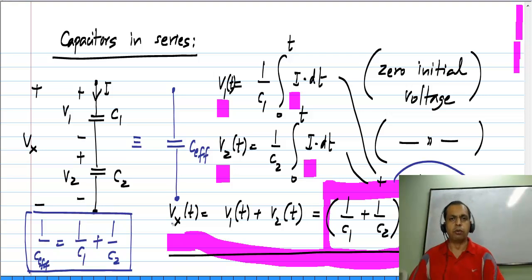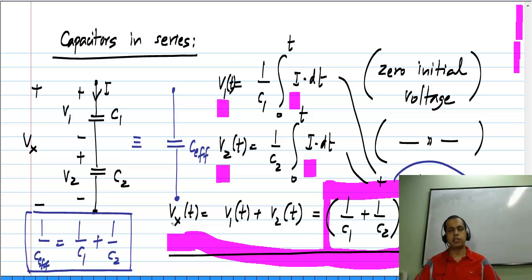Now, you can extend this to more than two capacitors. So if you have n capacitors in series, the reciprocal of the effective capacitance will be the sum of reciprocals of individual capacitances.